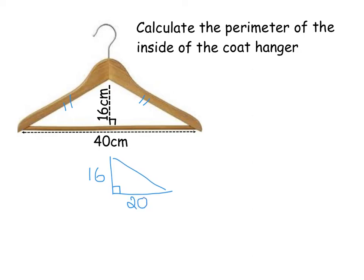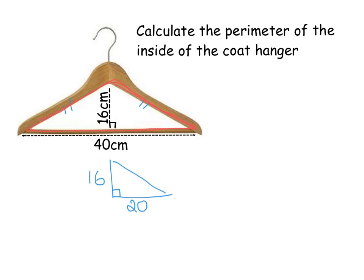So that's the dimensions I'm going to be using on my triangle. Now they want the perimeter of the inside. Now perimeter, we should know, is the total distance around the outside of the shape. So what we're actually after in this question is we want the length from here. If you follow that red line, if you can see that, right the way around. So we need our slope plus another slope and then that 40 along the bottom. So we really need to work out this slope here. That's what they are after.